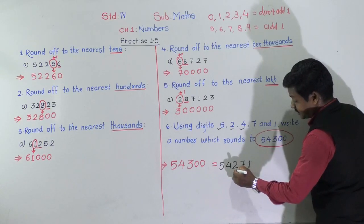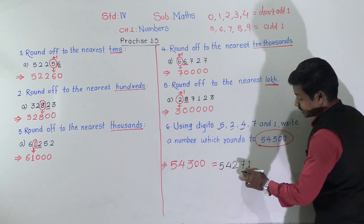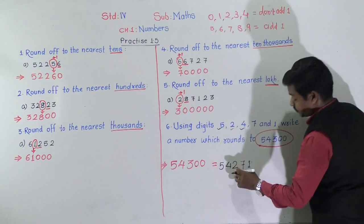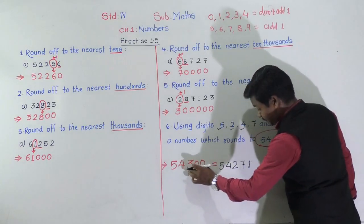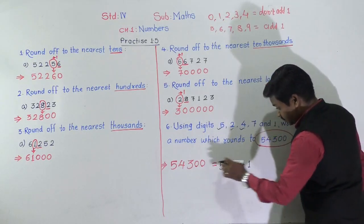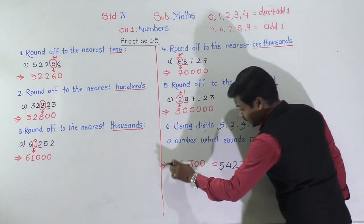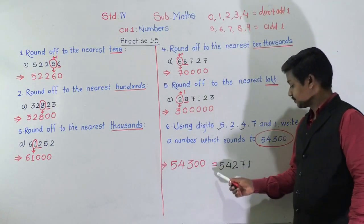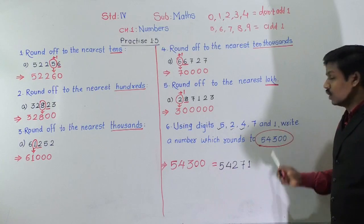Let's verify: 54,271 — at the hundreds place there is 2, circle it. After 2 there is 7, which is in the second rule, so add 1: 2 plus 1 equals 3. Write two zeros for the next two digits, and keep 5 and 4 as they are. So 54,271 rounds off to 54,300. Correct! The number is 54,271.